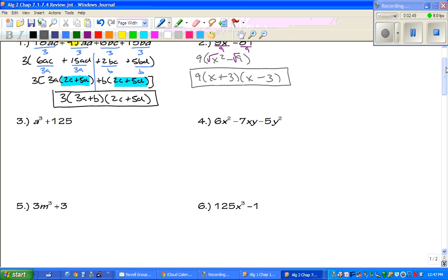Alright, number 3. Now, is there a GCF? No. So, what we're going to do is we're going to take the cubed root of everything. And remember that this is a pattern. The cubed root of a cubed is a, and the cubed root of 125 is 5. And remember that this is your a, and that is your b.